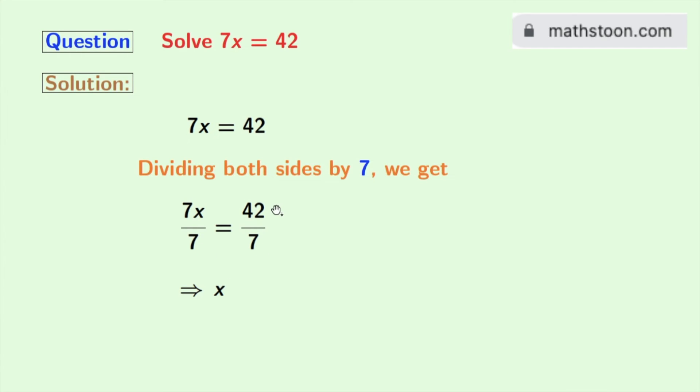And in the right hand side, look that 42 by 7 is there. That means it is 6. So finally we get x is equal to 6 as our answer.